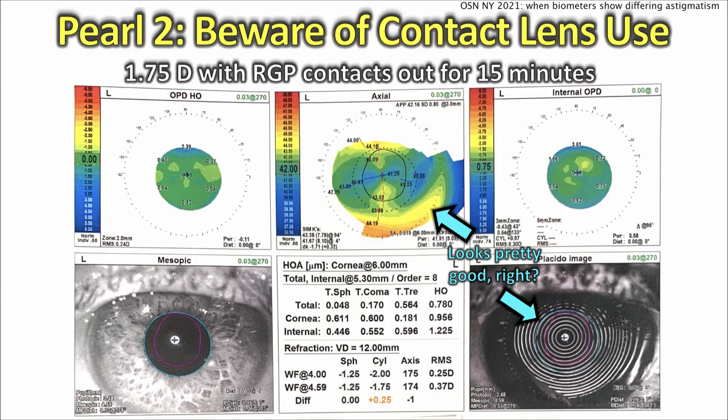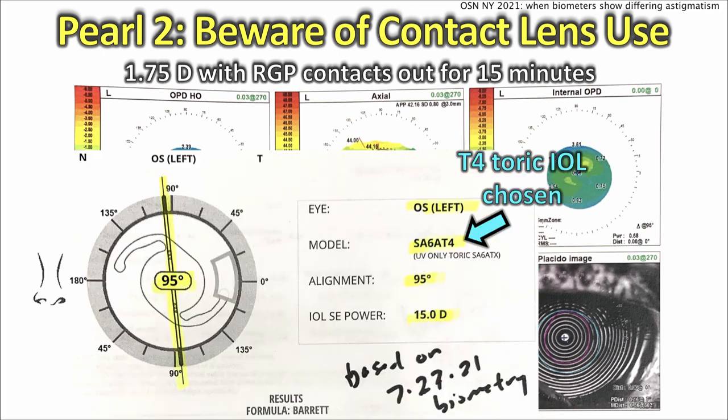Pearl two: beware of contact lens use. This patient looks pretty regular — 1.75 diopters of astigmatism — and those RGP contacts were out for only 15 minutes. But look at the topography: it looks clean, look at the reflection of the rings, it looks pretty good. It's a really clean axis. This should be easy, right?